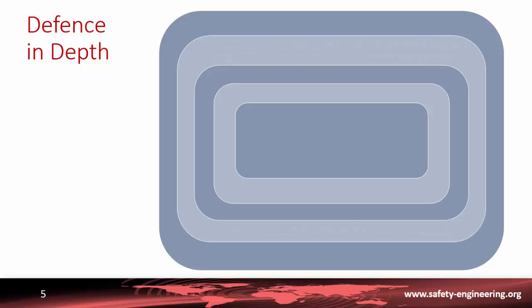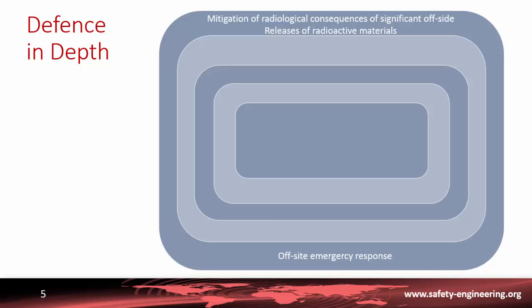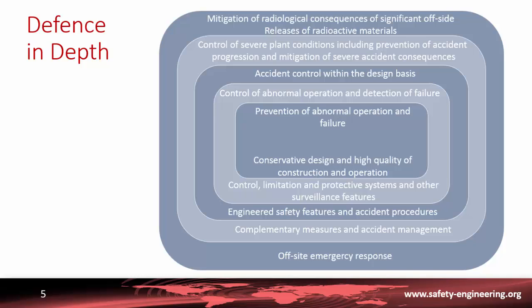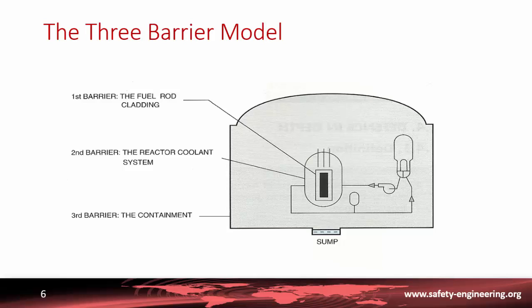If that fails, we reach the fifth level: mitigating the consequences of the accident and the release of radioactive material. This is the main role of the emergency response organization, both on-site and off-site with public authorities. These five levels encompass the various features taken to prevent, monitor, and mitigate the consequences of accidents.